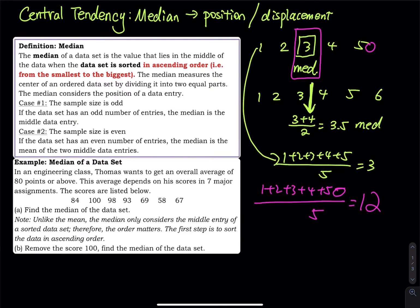Okay, so now let's read the definition. The median of a data set is the value that lies in the middle of the data when the data is sorted in ascending order. So from the smallest to the biggest number. The median measures the center of an ordered data set by dividing it into two equal parts.